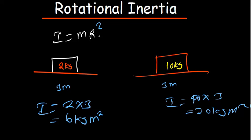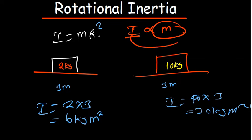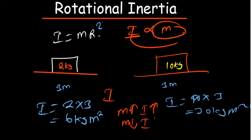As we can see, the object with bigger mass tends to have greater inertia. We can conclude that inertia is directly proportional to mass — as the mass gets bigger, inertia will also go up. If the mass goes down, inertia will go down as well.